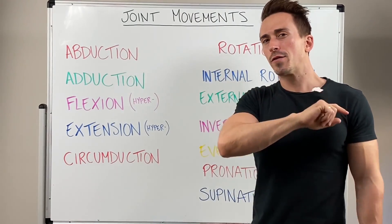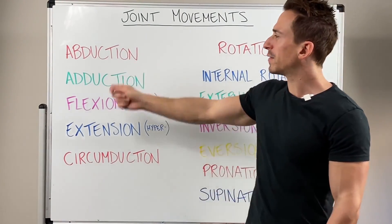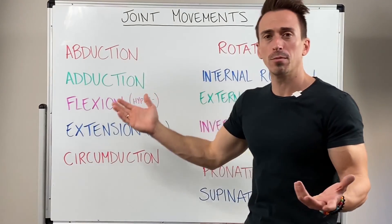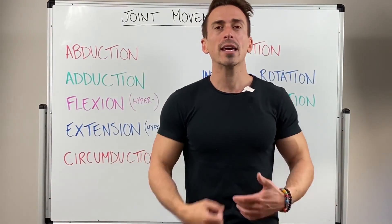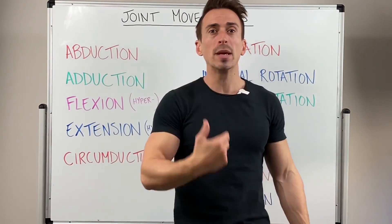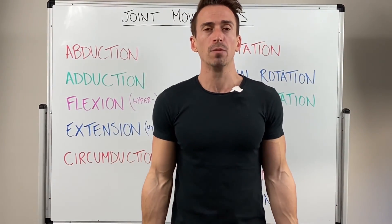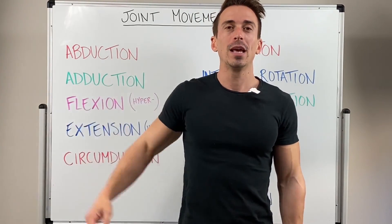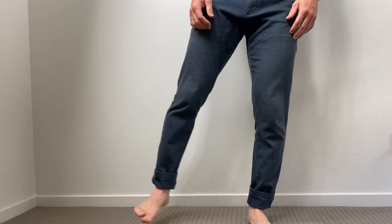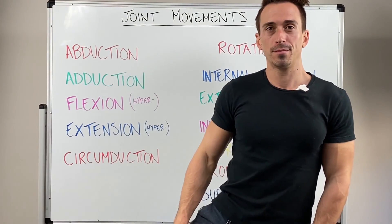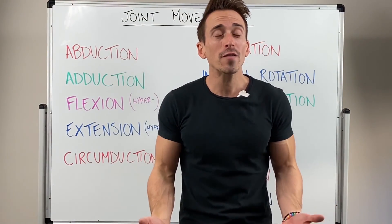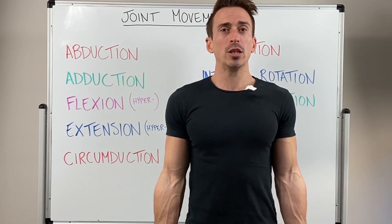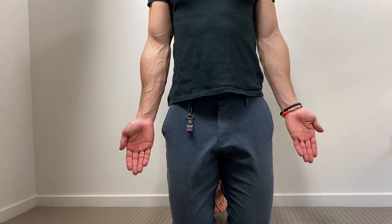Abduction is the first one. What does it mean if somebody's been abducted? It means they've been taken away — that's all abduction means. It means take away from the body, or take away from the midline of the body. So abduction of the arm, abduction of the leg — that's abduction. You can also have abduction of the fingers; again from the anatomical position, abduction of the fingers.